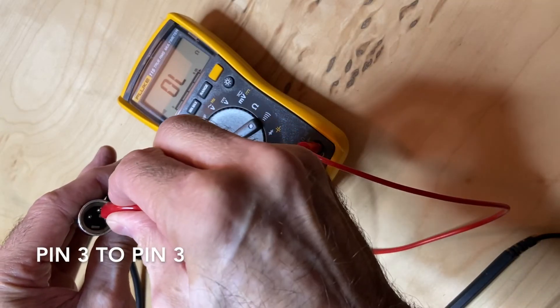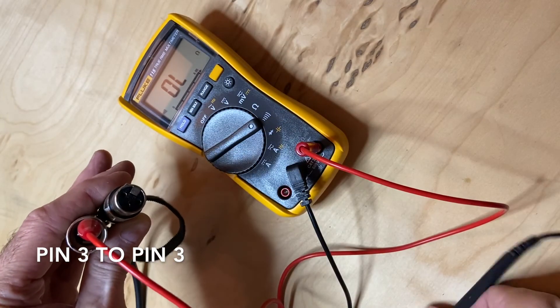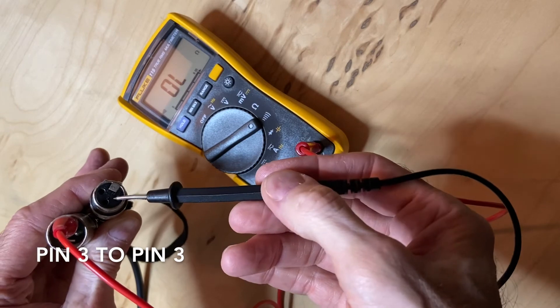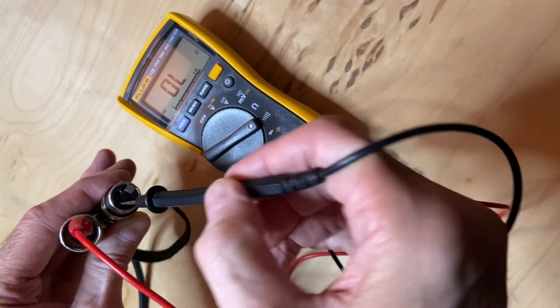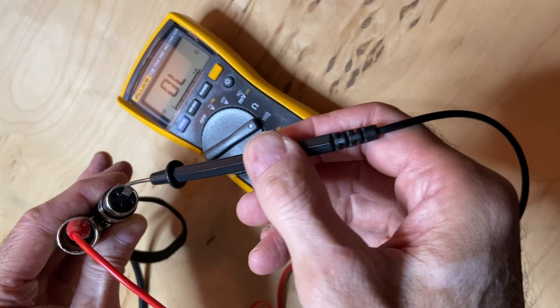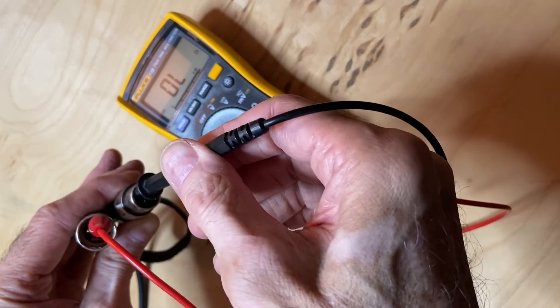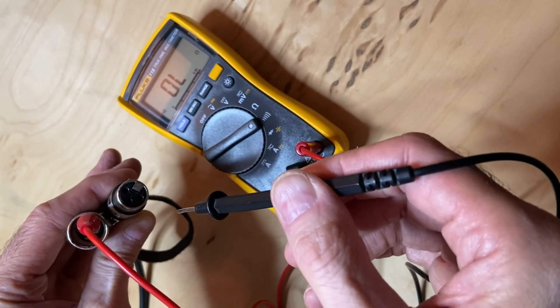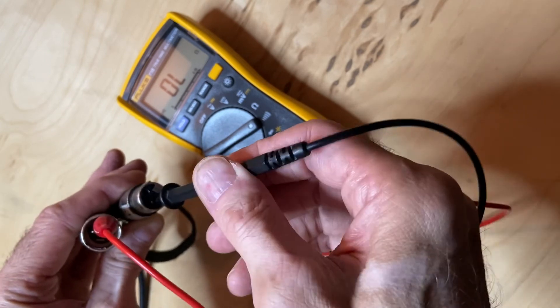Last, I'll move the alligator clip over to pin 3 on the male XLR. I'll take the probe, put it into pin 3 on the female end, and we have continuity. We should have nothing between pin 3 and 2, and nothing between pin 3 and pin 1.